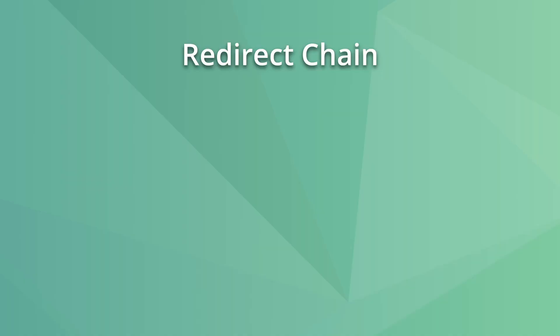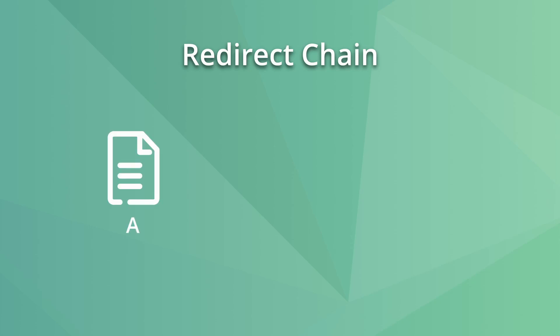The second reason is redirect chains. A redirect chain is when you redirect page A to B, then B redirects to C and so on, creating a chain that will make bots lose time trying to access pages that aren't available. If you do this, Google will stop following your redirects.